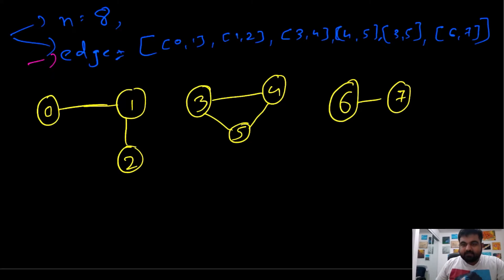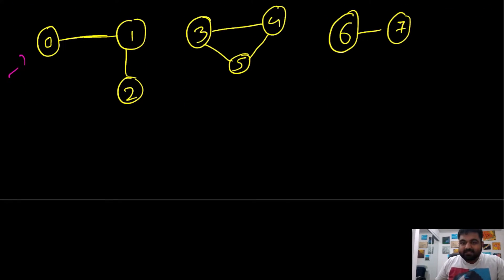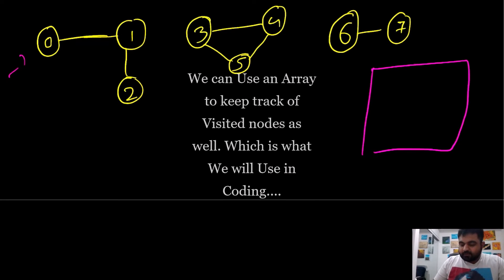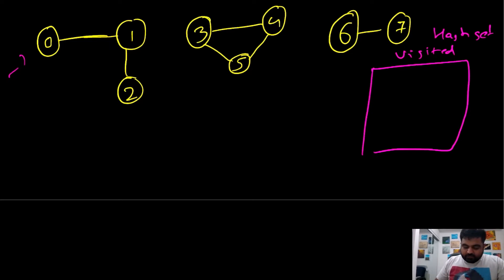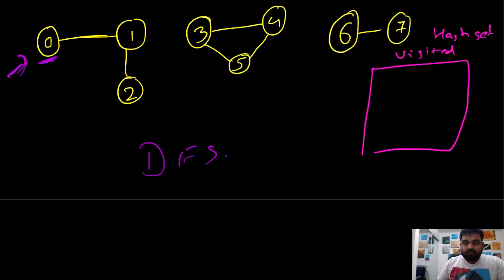Once we have our adjacency list, it becomes easier to iterate over the given nodes. The other part of the problem is finding how many connected components exist. We need a way to keep track of whatever nodes we have visited so far, and the best way is to create a hash set. We keep track of all the visited nodes. The approach is to start at the 0th position and run a DFS. DFS has the property that it starts from one element and continues iterating until it reaches all subsequent neighbors of that initial element.